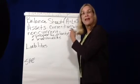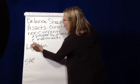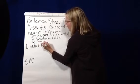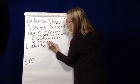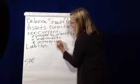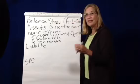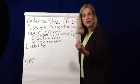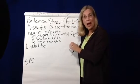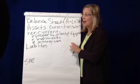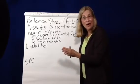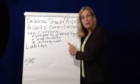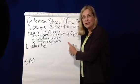The last kind of non-current asset is intangibles. Intangibles are assets that you can't touch, but they have value. So patents, copyrights, franchises, and goodwill are all examples of intangibles.